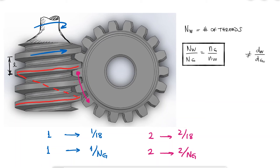However, if efficiency is assumed to be 100% — which usually isn't the case, but if friction is low enough to reasonably assume that — the relationship between torques does hold.